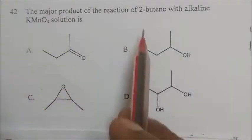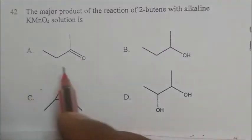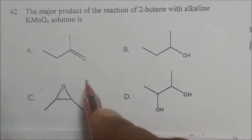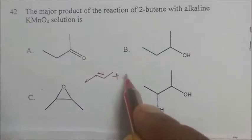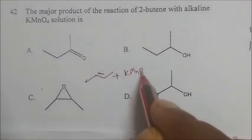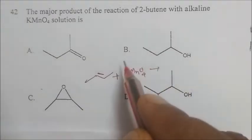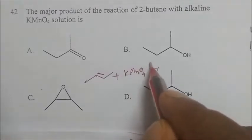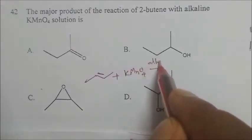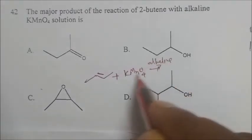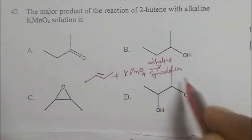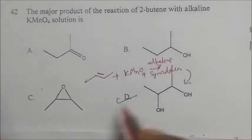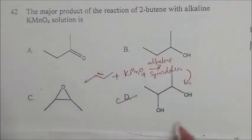The major product of the reaction of 2-butyne with alkaline KMnO4: 2-butyne reacting with alkaline KMnO4 undergoes syn addition (cis addition), producing the corresponding diol product. The correct answer is option C (only that answer is correct).